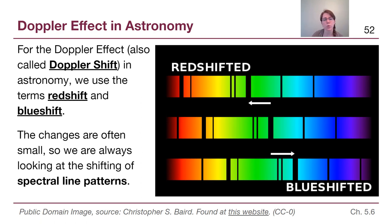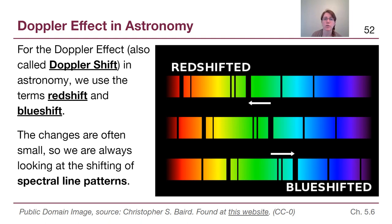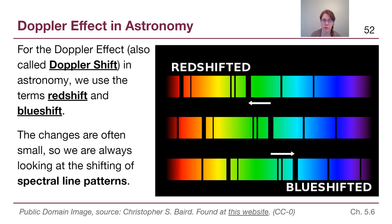In astronomy, we're going to start using the phrase Doppler shift almost interchangeably with Doppler effect. We use the terms red shift and blue shift because we will almost always be talking about light. Red shift means the wavelengths we are detecting have been shifted to longer wavelengths towards the red end of the rainbow compared to what we know they're supposed to be. Blue shift means the wavelengths have been shifted to shorter wavelengths, to the blue end of the spectrum. These changes are often very small — we are looking at the shift in overall patterns.